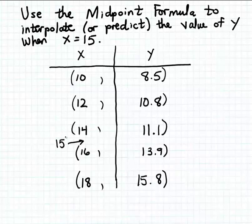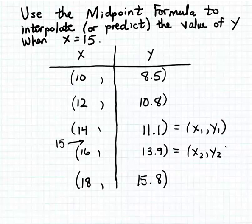To find the missing y value — to interpolate the value of y that matches an x value of 15 — we're going to find the midpoint between the two given points (14, 11.1) and (16, 13.9) on the rectangular coordinate system using the midpoint formula. So (14, 11.1) is one given point and (16, 13.9) is the second given point, and we'll find the point halfway between them.